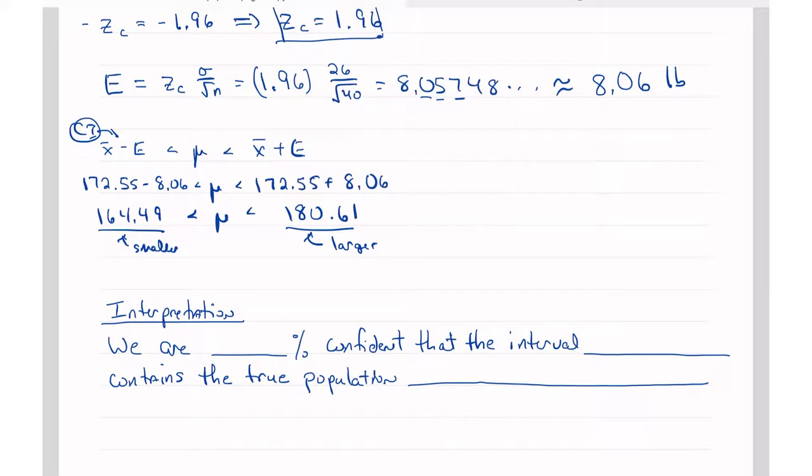So the first thing that we need is our confidence level, which is C. And C was 95%. So we are 95% confident that the interval, now I'm going to use these two numbers that I just calculated, and I'm going to put them in interval notation with the smallest number first, and the largest number second.